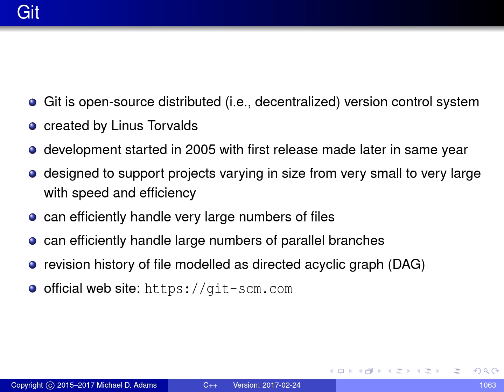Essentially, Linus needed a new version control system to be used to manage the development of the Linux kernel, and since there was nothing suitable for him to use, he developed his own. And since then, it's become very successful.